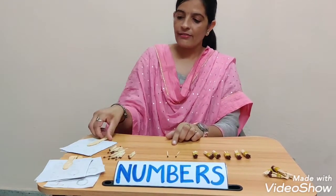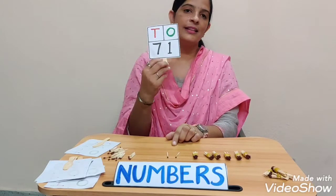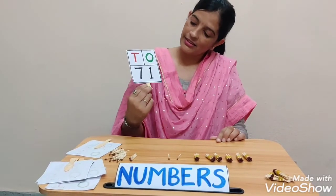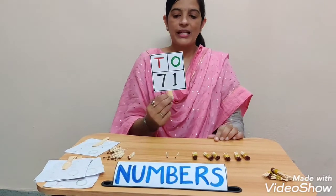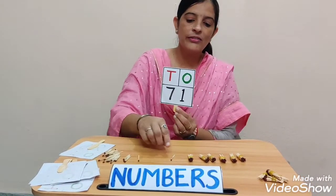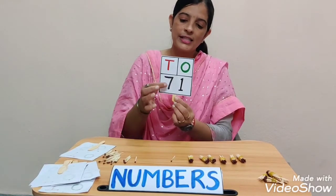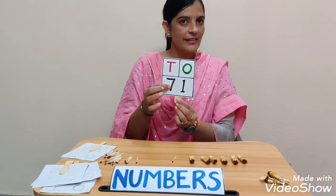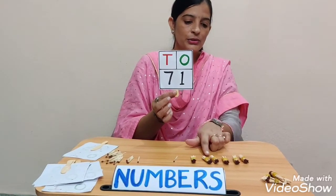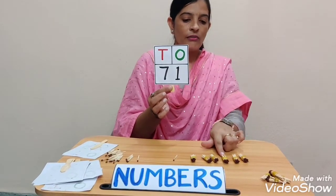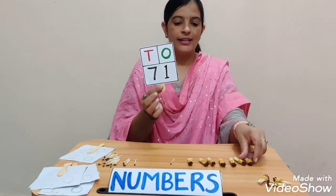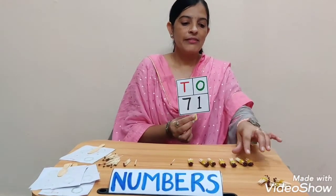Now take another number. Tell me this number — this number is 71. How many ones do I have to take? Yes, one 1. And how many tens will I take? Yes, 7 tens: 1, 2, 3, 4, 5, 6, and one more bundle. The number will be 71.